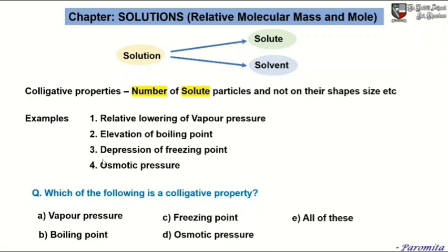C: freezing point — freezing point is not a colligative property, whereas depression of freezing point is a colligative property. So our answer, once again repeating, is D.